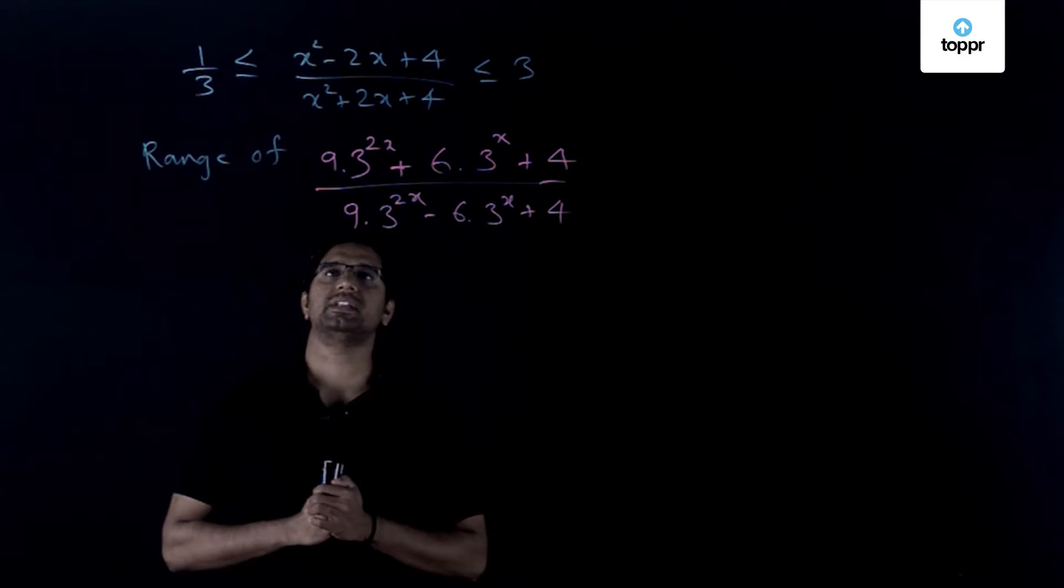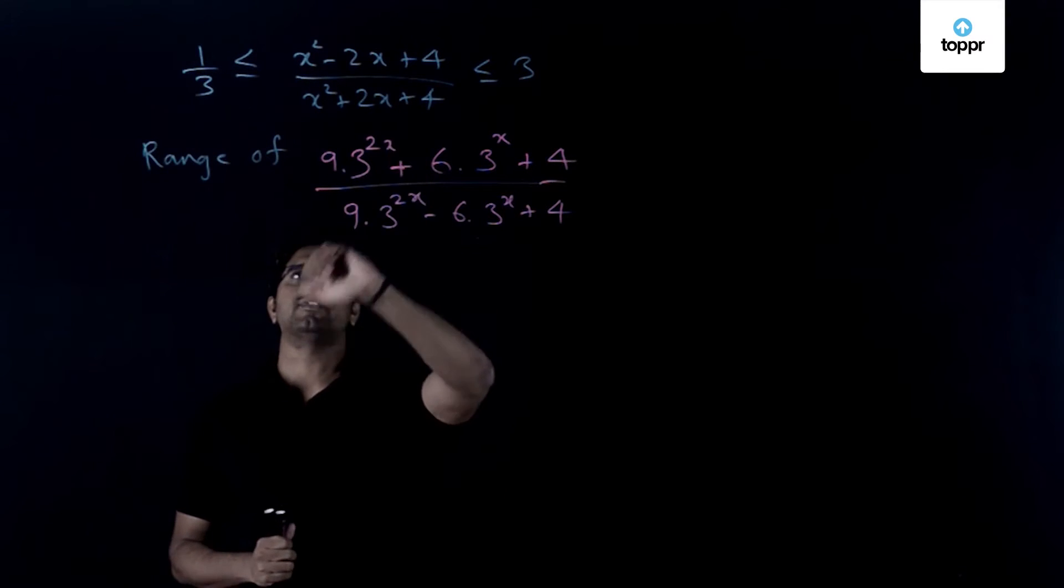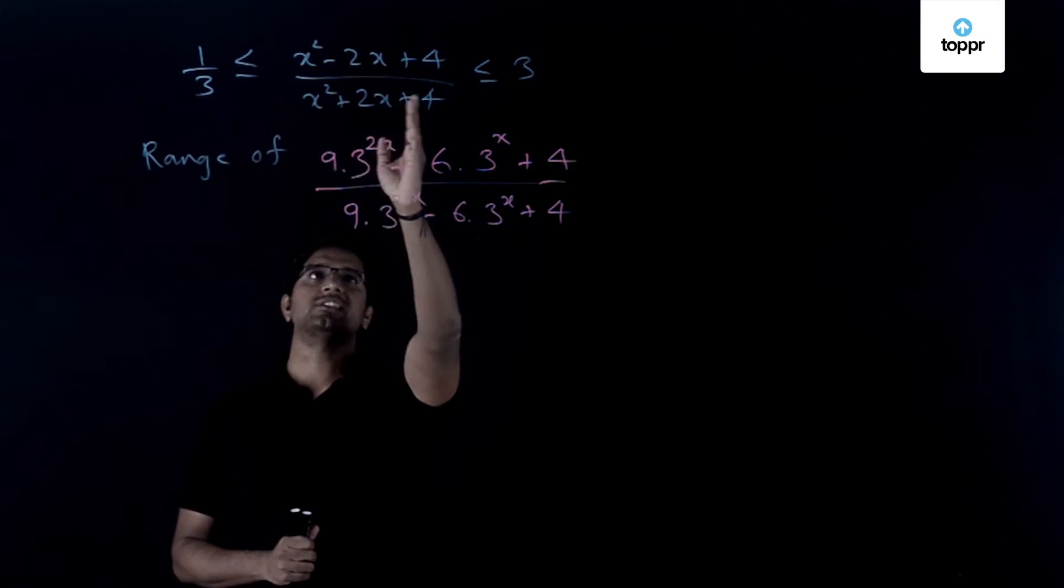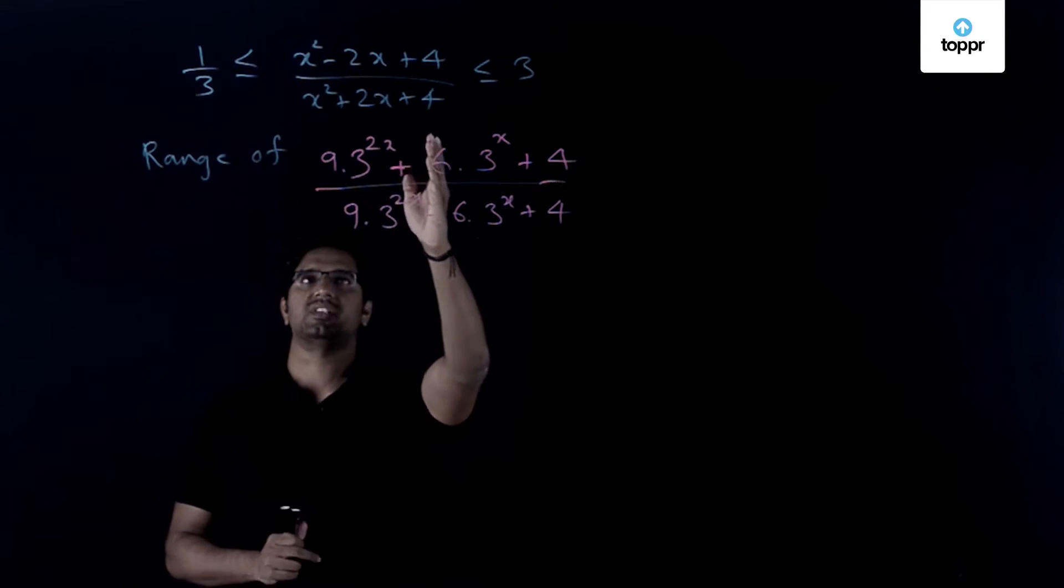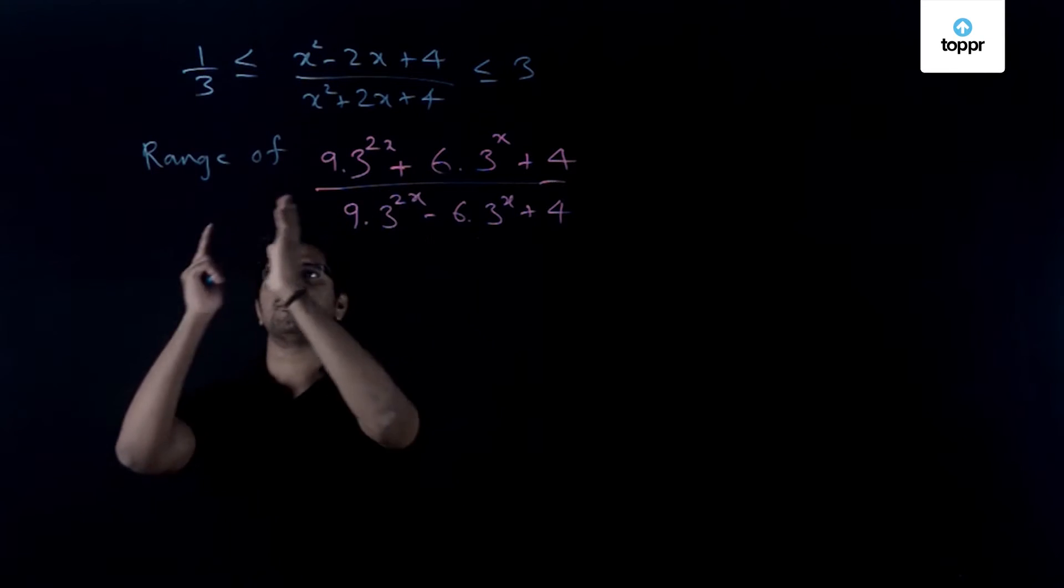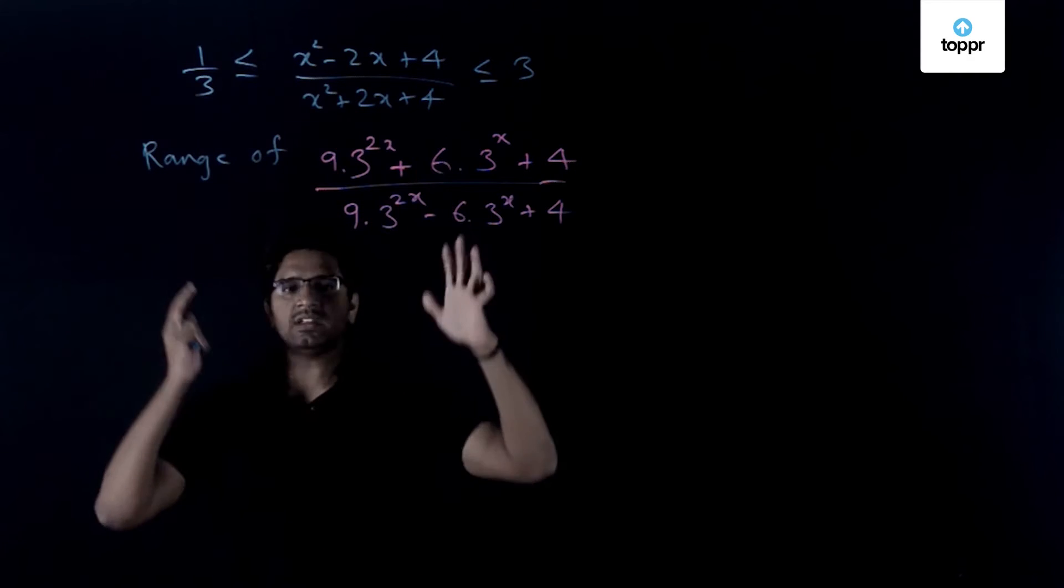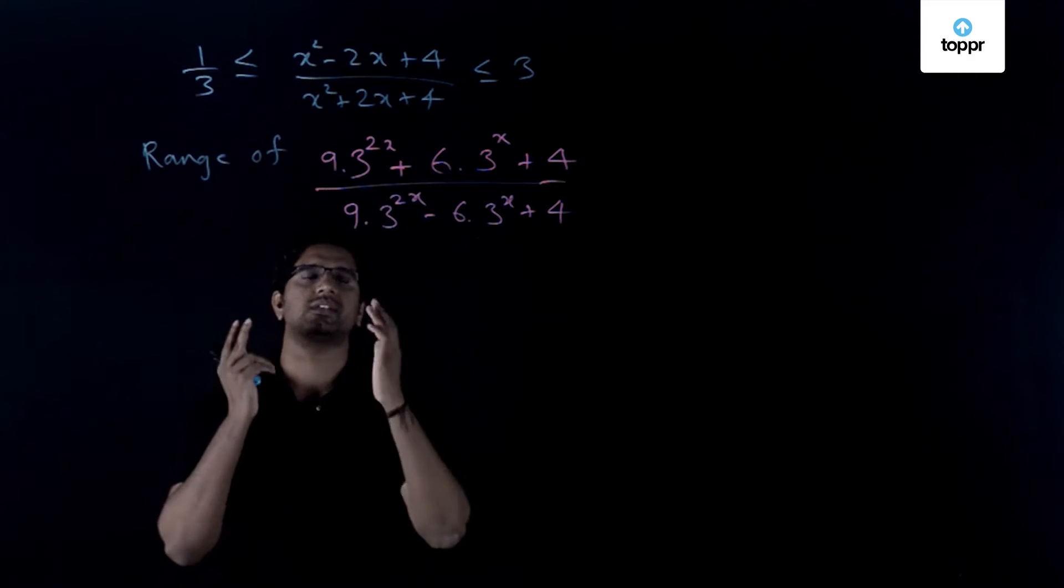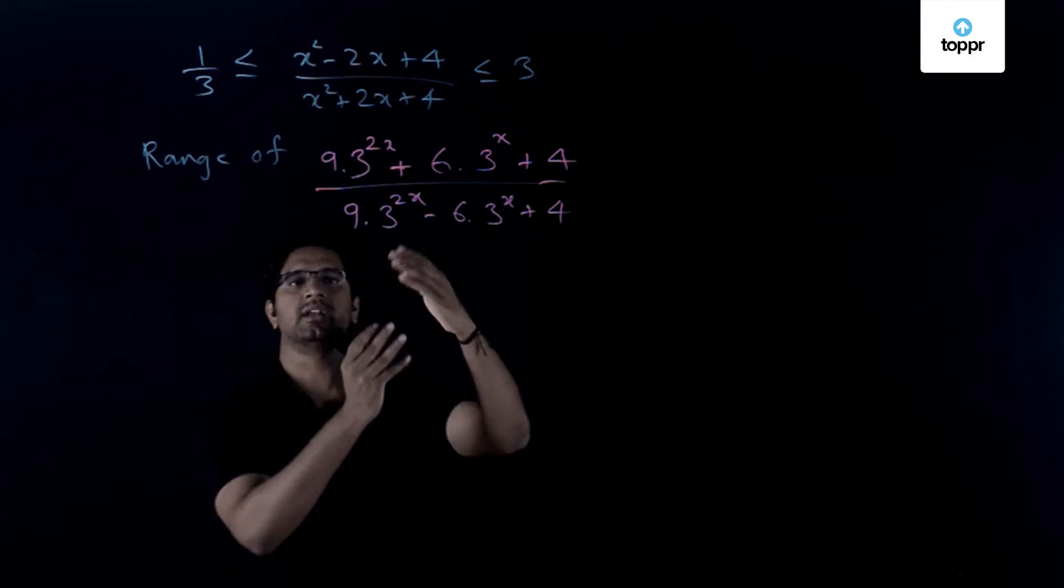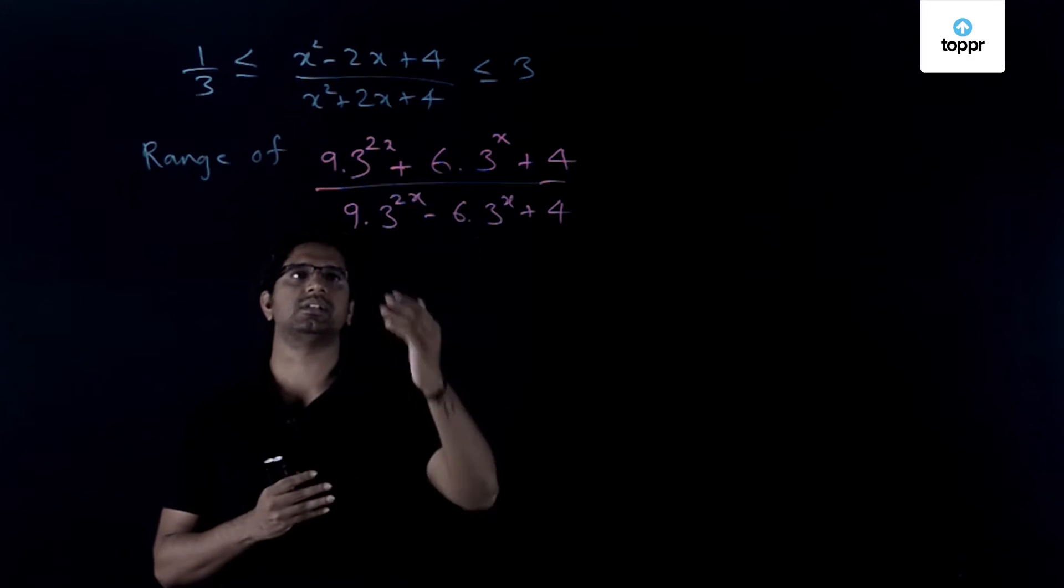In this problem, we have been given a rational function which is defined as x² - 2x + 4 over x² + 2x + 4, and it lies between 1/3 and 3. Using this, we need to find the range of another rational function, but here now we are dealing with exponentials.